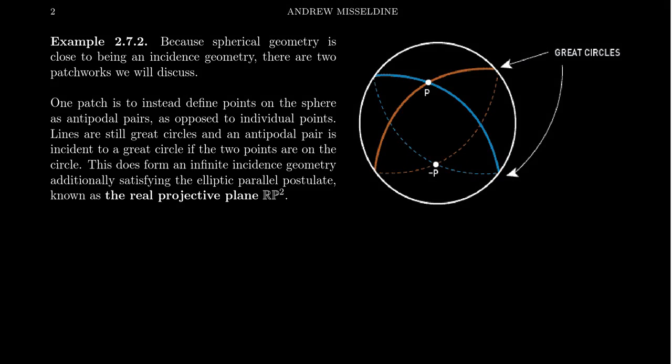In the previous video, we introduced the idea of spherical geometry, illustrated right here where our set of points is the unit sphere inside of three-dimensional Euclidean space. Points are just elements of the sphere — the surface of the sphere, not the ball, but just the surface, just the crust of the Earth.